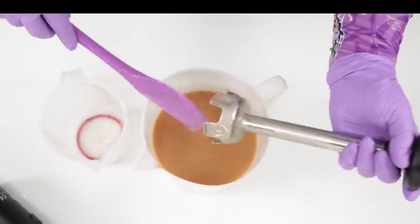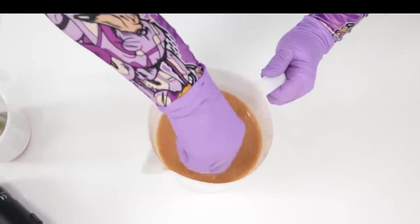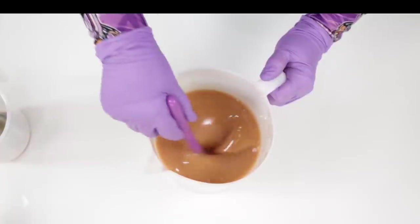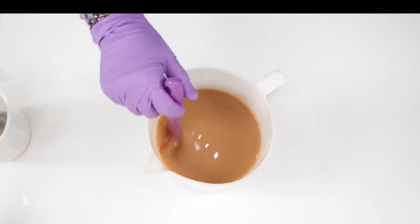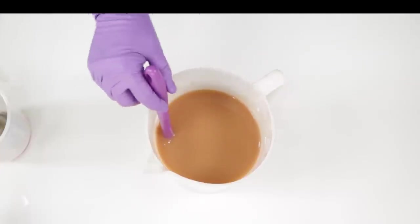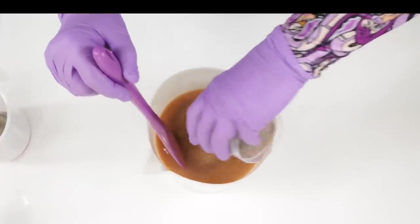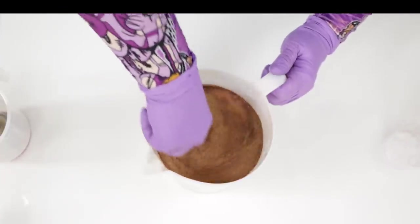I also want my apricot seeds throughout the entire bar of soap so I'm going to pop those in now. At this point my trace is still really light and normally if you're going to add some sort of exfoliant you would wait till it's a little bit thicker especially if it's something like pumice because that will just sink right to the bottom of your soap.